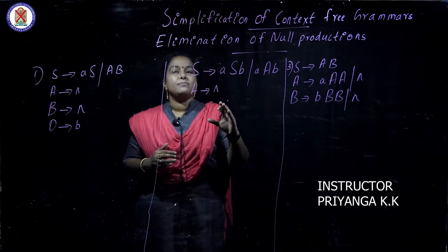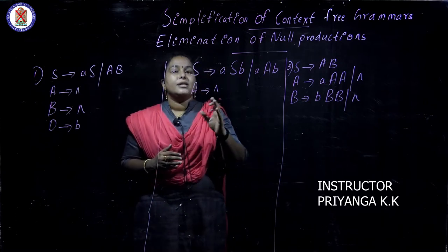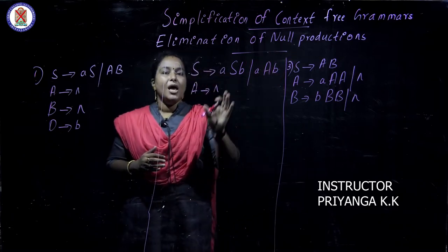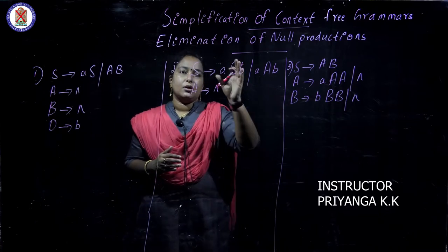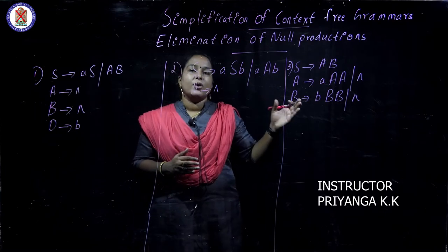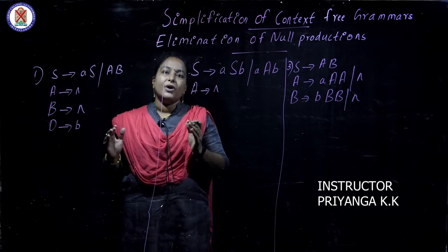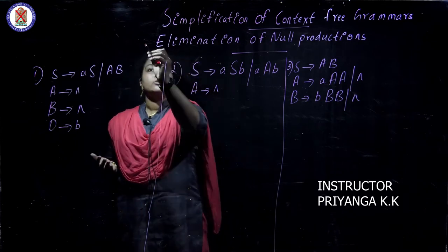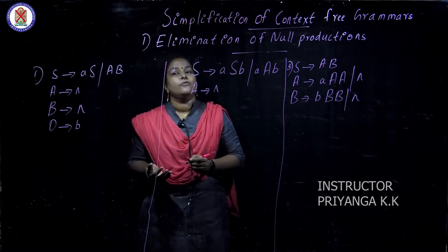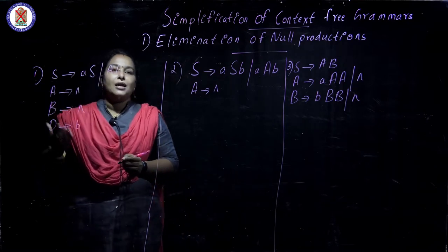But some context-free grammars may contain constructs which cannot be handled by a parser, so before doing that we must simplify the context-free grammar. Simplification consists of three steps. The first is the elimination of null productions, which is covered in this video, and we will see the two remaining steps in subsequent videos.